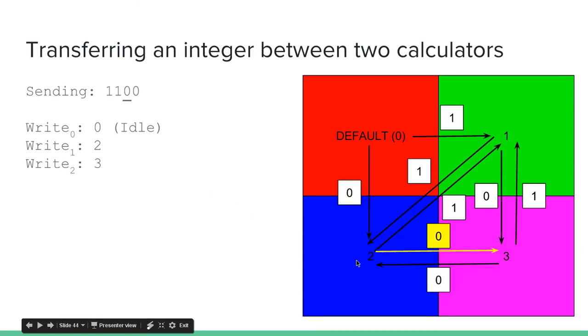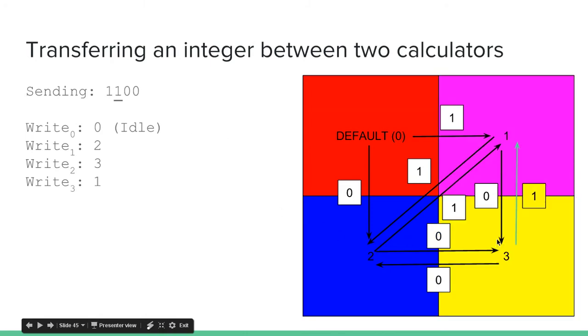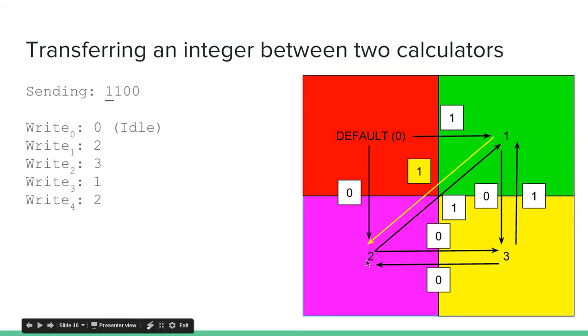Then we're going to write 3. Based on our protocol, that's defined as another 0. Then we're going to write 1, which based on our protocol is defined as 1. And then we're going to write 2, which based on our protocol is defined as another 1.